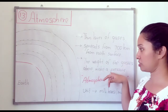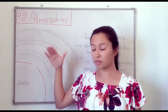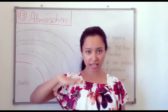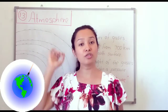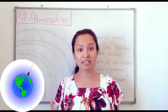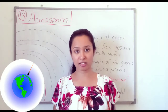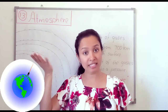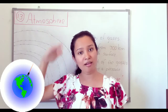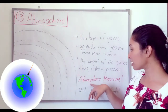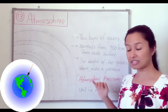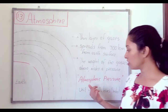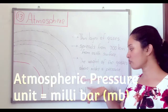The weight of the gases above makes pressure. We are here on the earth's surface, and above us there are gases. Gases have a mass and a weight, so the weight of the gases above us makes pressure. We call this pressure atmospheric pressure. The unit of atmospheric pressure is millibars.